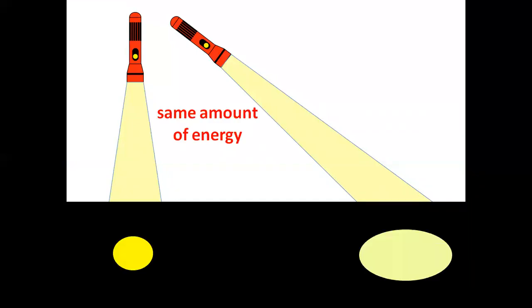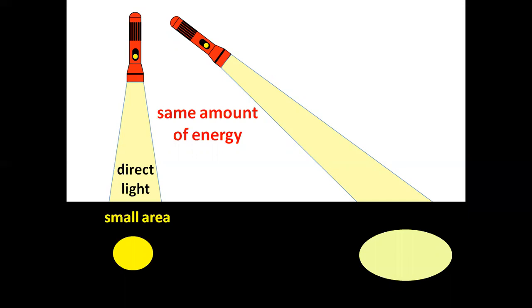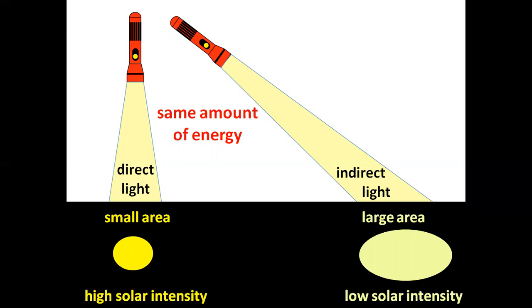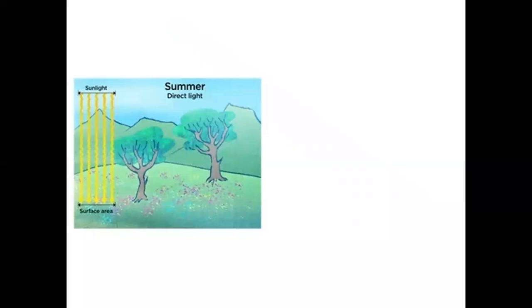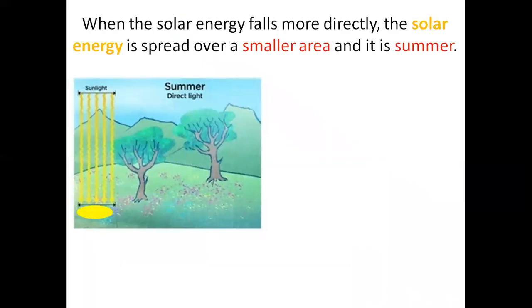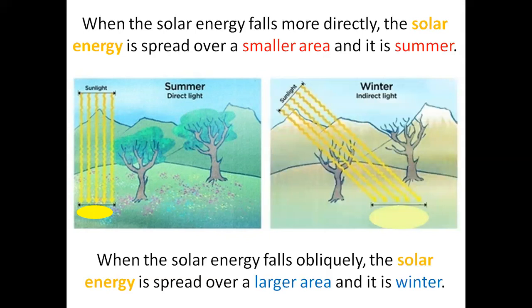Consider two identical torches that have the same amount of energy — they produce different spots of light. The torch shining directly onto the surface produces direct light: the light is concentrated on a small area and has a high solar intensity. The light shining at an angle is called indirect light; it is spread over a large area and has a low solar intensity. When solar energy falls more directly, it is spread over a smaller area and it is summer. When solar energy falls obliquely — obliquely means at an extreme angle — the solar energy is spread over a larger area and it is winter.